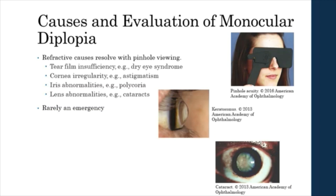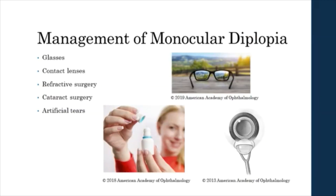Further steps in evaluation should be taken to determine the etiology of the refractive cause. Refractive causes of monocular diplopia are rarely emergencies and can be treated with glasses, contact lenses, refractive surgery, cataract surgery, or the use of artificial tears if the cause is tear film insufficiency.